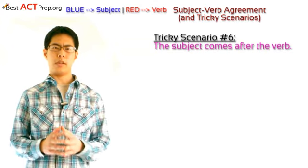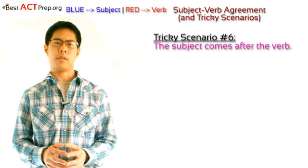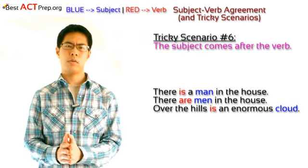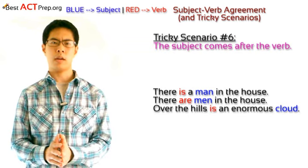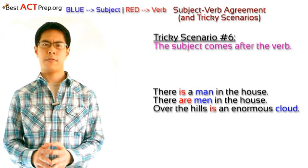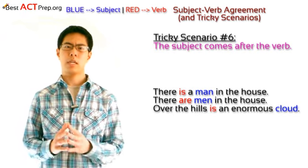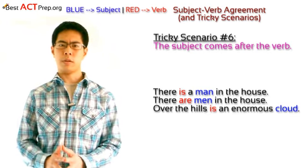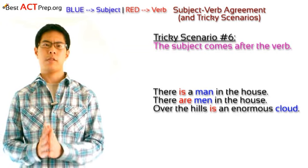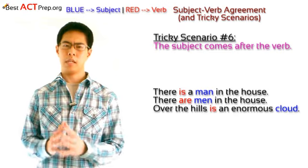And finally, tricky scenario number six: the subject comes after the verb. Take a look at these three examples. Number one: 'There is a man in the house.' Number two: 'There are men in the house.' Number three: 'Over the hills is an enormous cloud.' In the first example, 'man,' which is singular, is the subject, so the verb should be the singular 'is.' In the second example, 'men,' which is plural, is the subject, so the verb should be the plural 'are.' In the third example, 'cloud,' which is singular, is the subject, so the verb should be the singular 'is.'